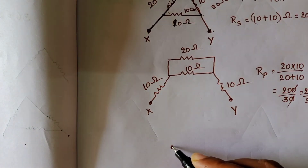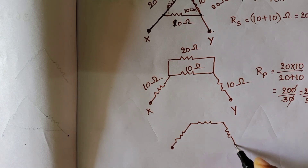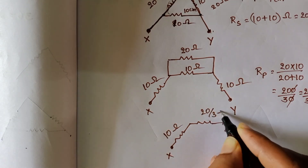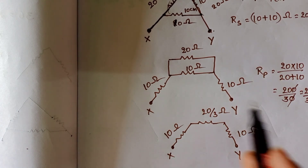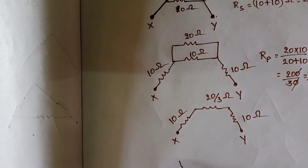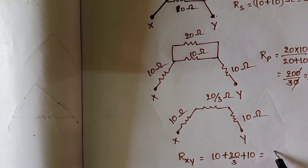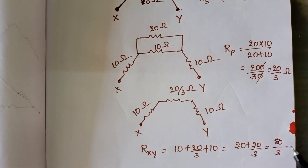We now have three resistors in series: 10 ohm, 20/3 ohm, and 10 ohm. The equivalent resistance is 10 + 20/3 + 10 = 20 + 20/3 = 60/3 + 20/3 = 80/3 ohm.